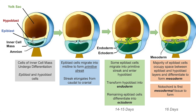The ectoderm will become the skin and nervous system. The mesoderm will become the cardiovascular system and the musculoskeletal system. And the endoderm will become the majority of the internal viscera of the organism. And that's the process of gastrulation. In future lessons, we're going to talk about neurulation and other embryological processes. I hope you found this lesson helpful — please like and subscribe for more lessons like this one, and leave any questions in the comments below. Thank you so much for watching.